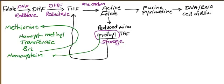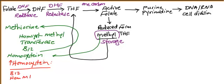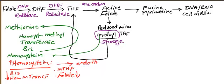The causes of elevated homocysteine in the blood are clear from the pathway: B12 deficiency, decreased homocysteine methyltransferase enzyme activity, decreased methyl-tetrahydrofolate, or folate deficiency. All of these lead to increased homocysteine, which damages endothelial cells and leads to vessel thrombosis.